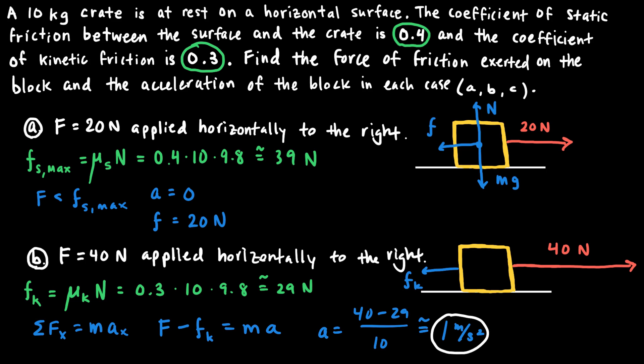Comparing the two cases: in Case A, the applied force was less than the maximum static friction, so the block remained at rest and the frictional force equaled the applied force. In Case B, the applied force exceeded the maximum static friction, so the block began to accelerate. As it slid, kinetic friction acted on it, and the net force produced an acceleration to the right.